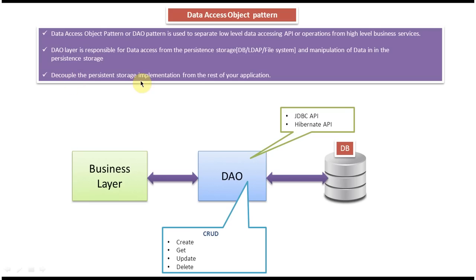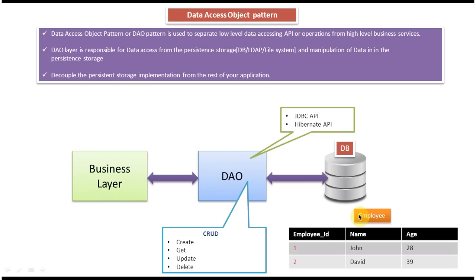The third explanation is that the DAO layer decouples the persistent storage implementation from the rest of the application. For example, suppose there is an employee table in the database. The DAO layer will contain methods like creating an employee record, updating an employee record, deleting an employee record, or getting an employee record from the employee table. This DAO layer will only contain methods to access the database.